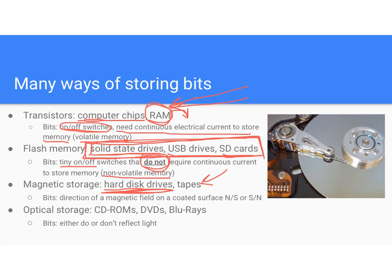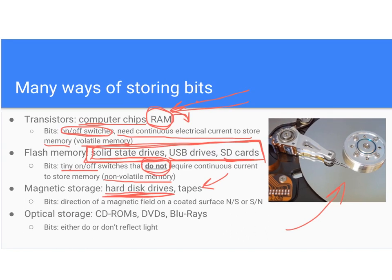The way hard drives work — there's actually a picture of one on the slide — we store a bit of data by orienting a magnetic current. A little piece of the disk might be oriented to north, another to south, another to north, and we have a little wand going around the disk reading those bits — reading north, south, north, and so on — and interpreting those as zeros and ones.